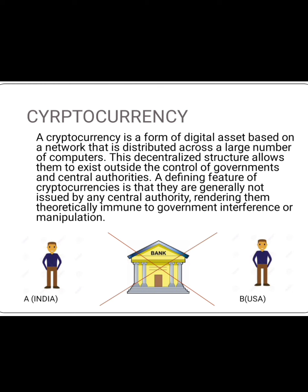Let us take an example of a person A who is living in India and a person B who is living in USA. If A wants to send money to B, he needs to contact the bank. First, he will give Indian rupees to the bank, and then the bank will convert those rupees into dollars and take some charges from Mr. A for converting and sending his money to Mr. B. The bank will also require all the information, verifying that the sender and receiver are identified, clarifying all the documents of both parties, and then the money is sent to person B living in USA.